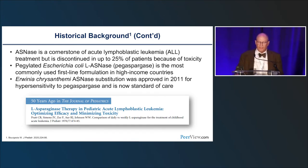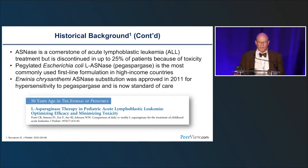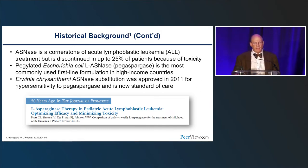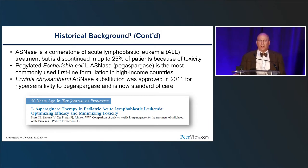Asparaginase is a cornerstone for ALL treatment, but because it's a protein, it's discontinued in up to 25% of patients because of toxicity. Asparaginase was pegylated to make it less obvious to the immune system, and it's been used as a first-line formulation for a long time in high-income countries. Recently, Erwinia chrysanthemi was approved in 2011 as an alternative for patients with hypersensitivity to pegasparaginase, which was a great relief when running the 0434 T-ALL study from 2007 to 2014.